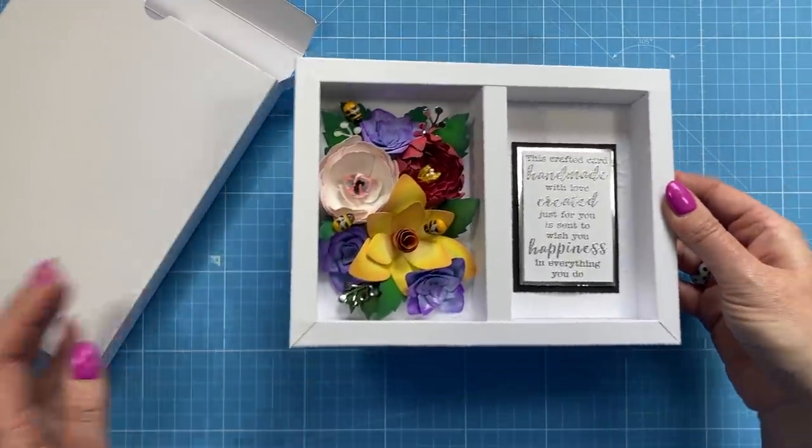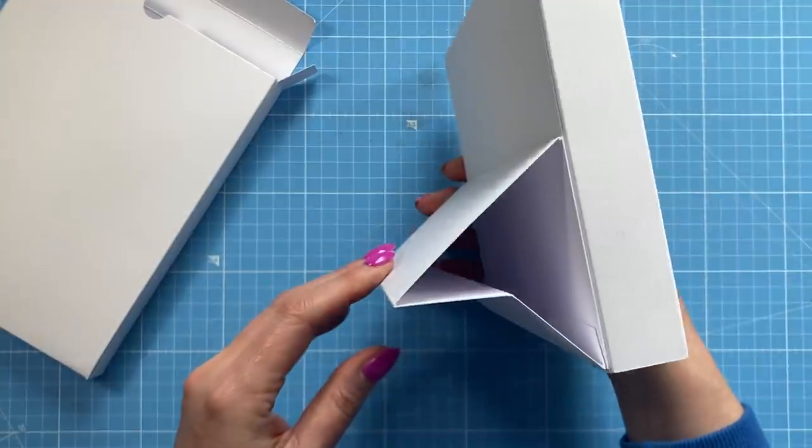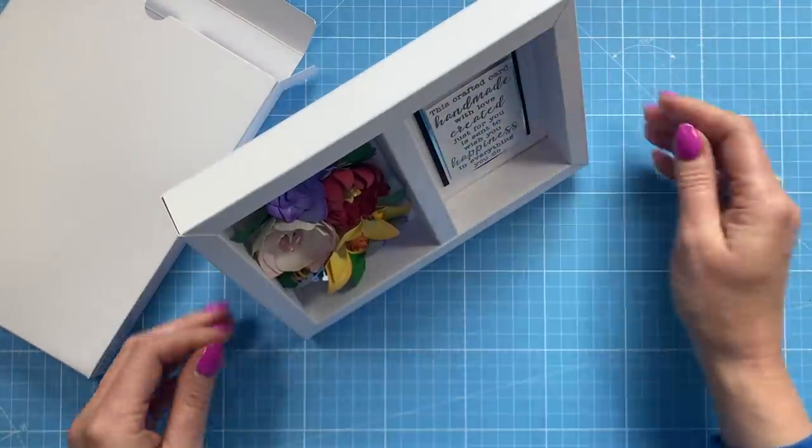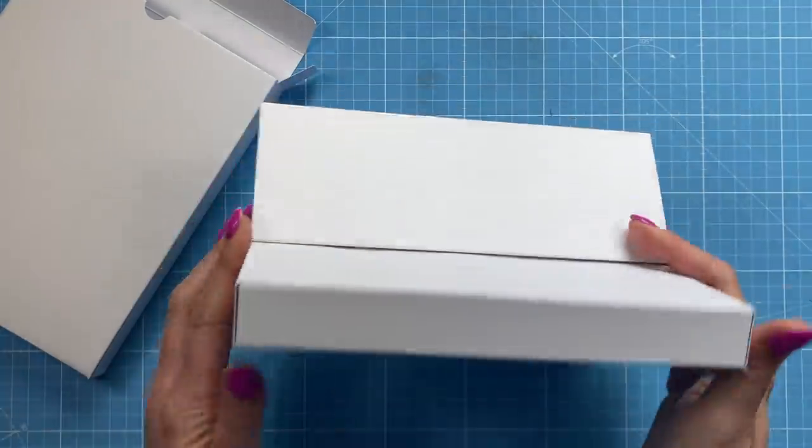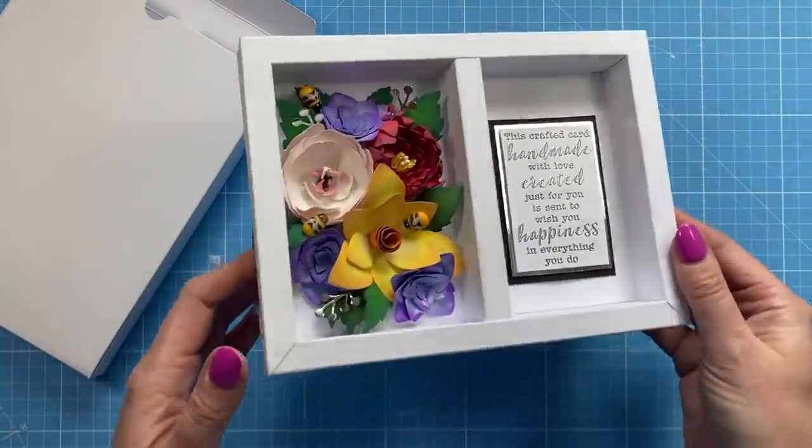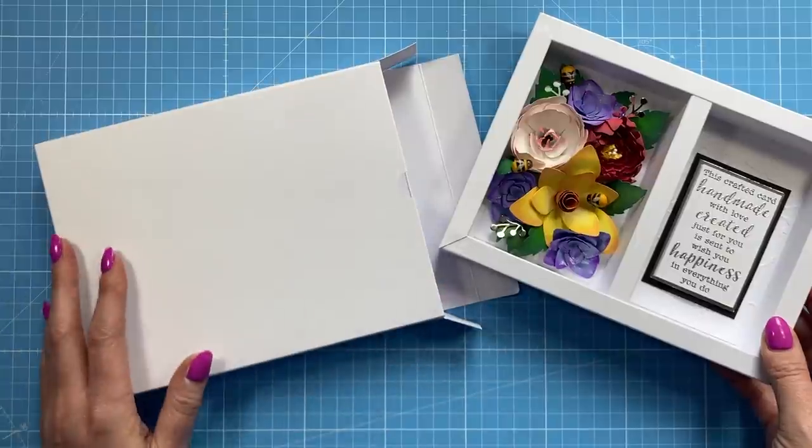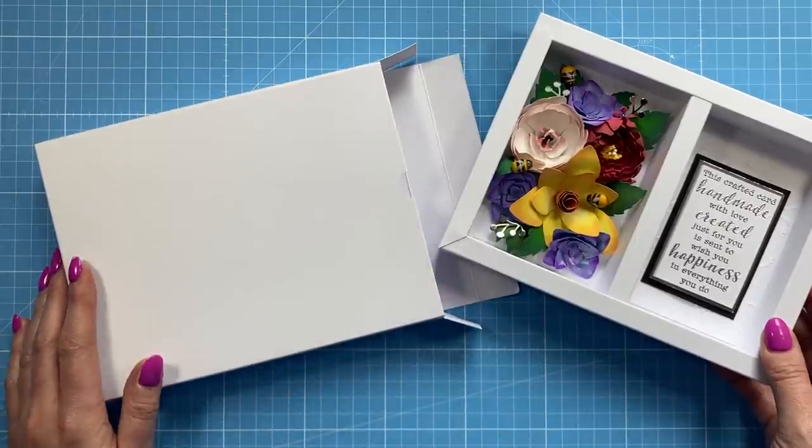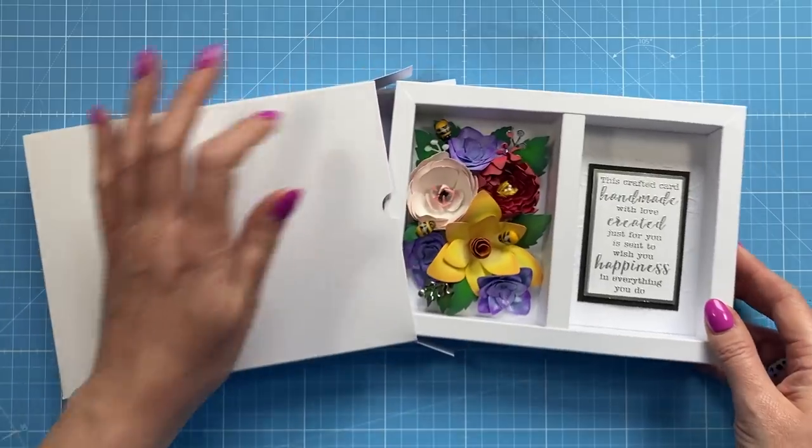And then you can see the card that I've got in this one here, which is a new one—gorgeous shadow box. It just finishes it off. You've put all this work into something beautiful in 3D; you want something that's going to be able to protect it and also for the person to keep it in if they're going to treasure it as a keepsake. So yeah, very easy to do. Let me show you how.